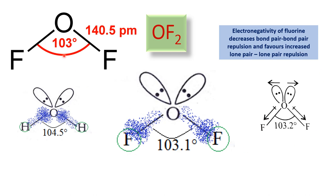The reason the bond angle of OF₂ is less than that of H₂O is because of the electronegativity of the fluorine atom, which causes electron density to shift toward fluorine. As a result, the bond pair repulsion between the O–F bonds is decreased compared to the lone pair–lone pair repulsion, which becomes higher. And as a result, the bond angle becomes lesser — that is why OF₂ has a smaller bond angle than H₂O.